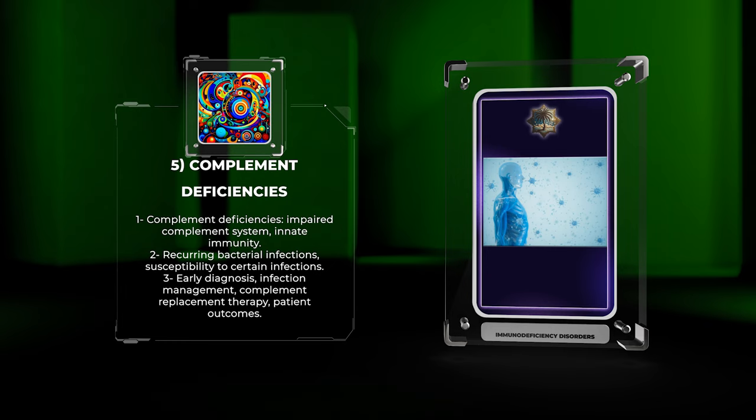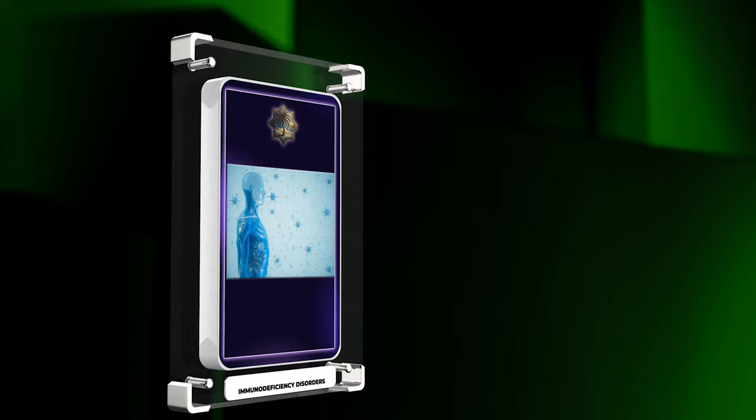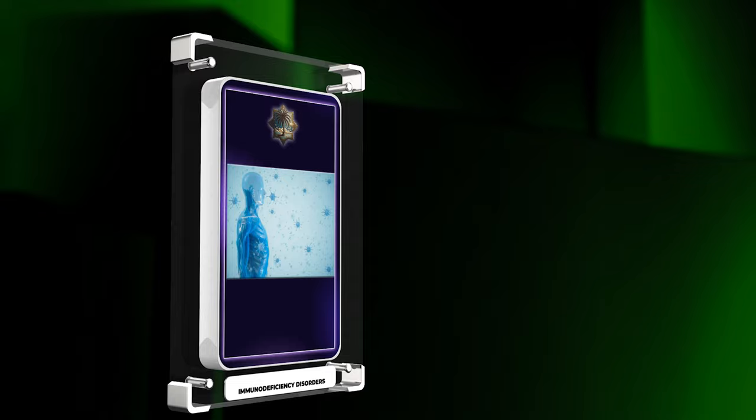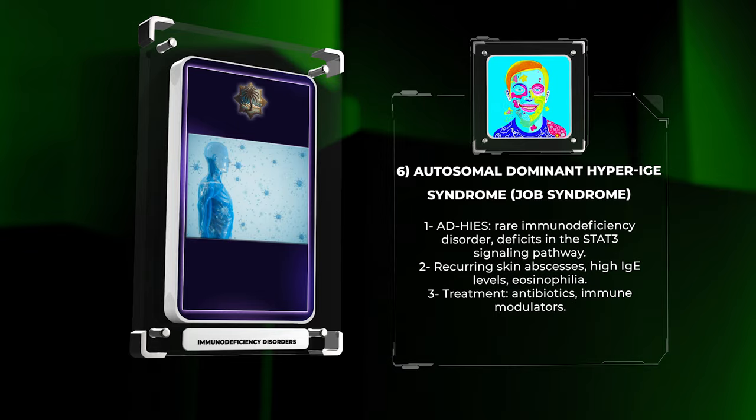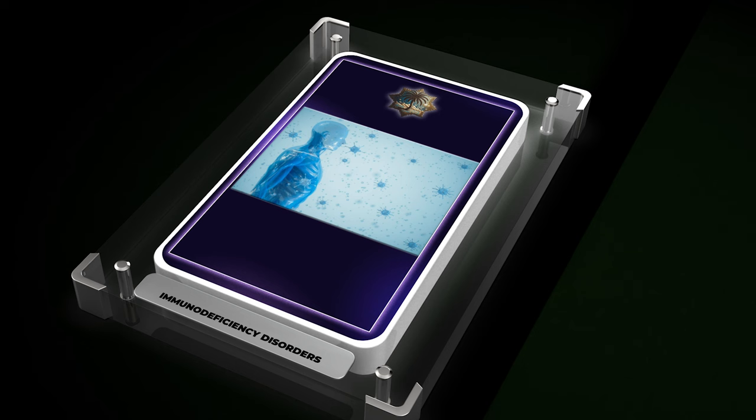Early diagnosis, infection management, and complement replacement therapy are important for patient outcomes. Autosomal dominant hyper-IgE syndrome (AD-HIES), or Job syndrome, is a rare immunodeficiency disorder with deficits in the STAT-3 signaling pathway. This affects immune function, leading to recurring skin abscesses, high IgE levels, and eosinophilia. Treatment involves antibiotics and immune modulators.